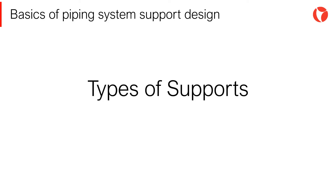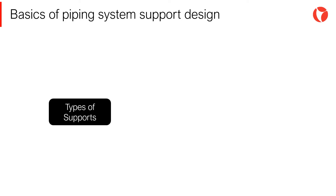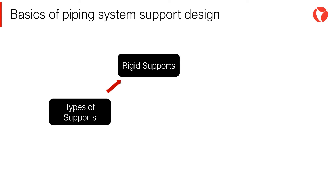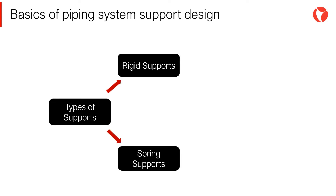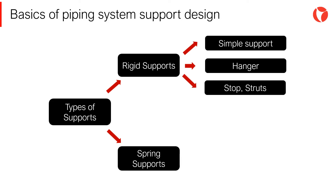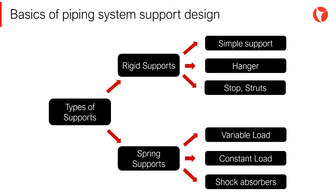Pipe supports are categorized according to the function and restriction they exert on a piping system. Supports are generally divided into rigid and spring supports. Within rigid supports we can find simple supports, hangers, struts, etc. Within spring supports we can find variable load, constant load, and shock absorbers.